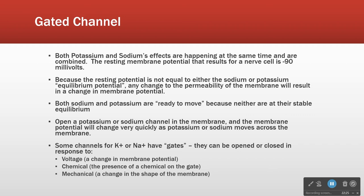The Nernst potential for potassium is minus 90, and the Nernst potential for sodium is plus 66. We're at minus 70. So if I open a potassium channel, potassium is not at its Nernst potential, so it can move — it's going to go down its concentration gradient. If I open a sodium channel, minus 70 is really far away from plus 66.